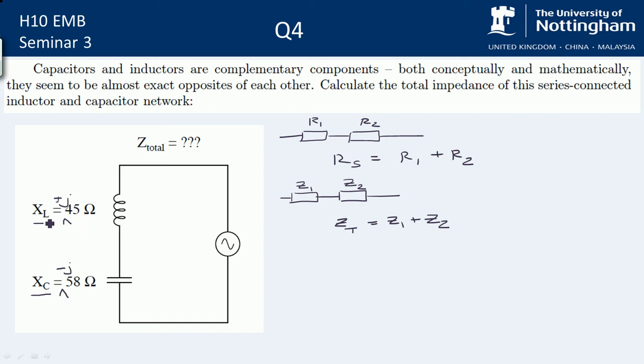So with inductors, we've got that plus 90 degrees or plus j. And for capacitors, we've got that minus 90 degrees or minus j. So we need to take that into account. So essentially, a complex impedance is made up of a resistance and a reactance. And the reactance part is going to be your j term effectively.